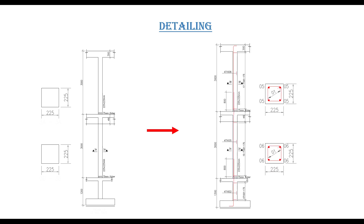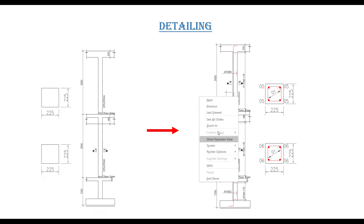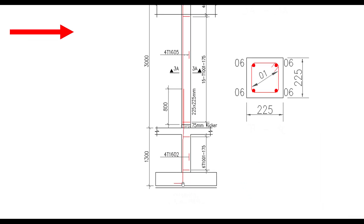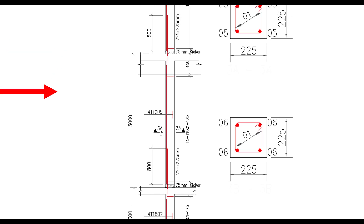Now that we've explained the column section, the next thing is to show the arrangement of reinforcement. The starter bar starts from the foundation and goes up. This shows 4H16, meaning you have four number of bars and H02 is the bar mark. The shear links are denoted by two lines showing where they start and end — we have six number of links, size 10mm, bar mark 01, with a spacing of 175mm.